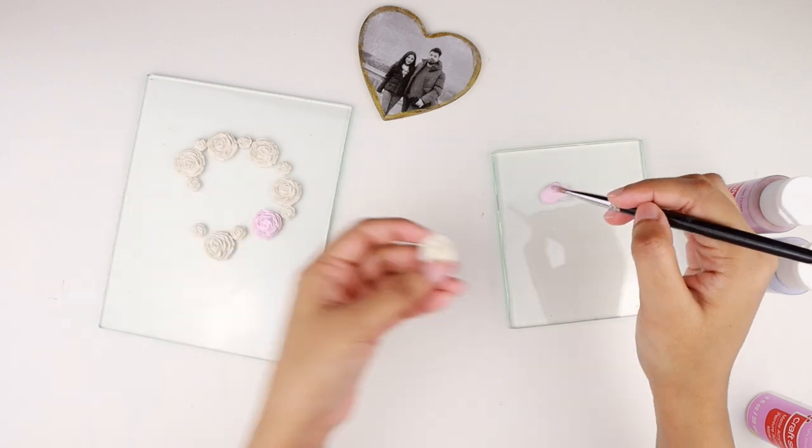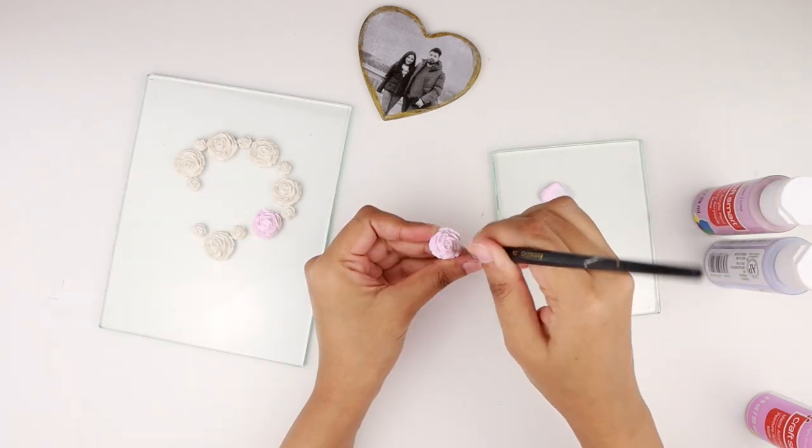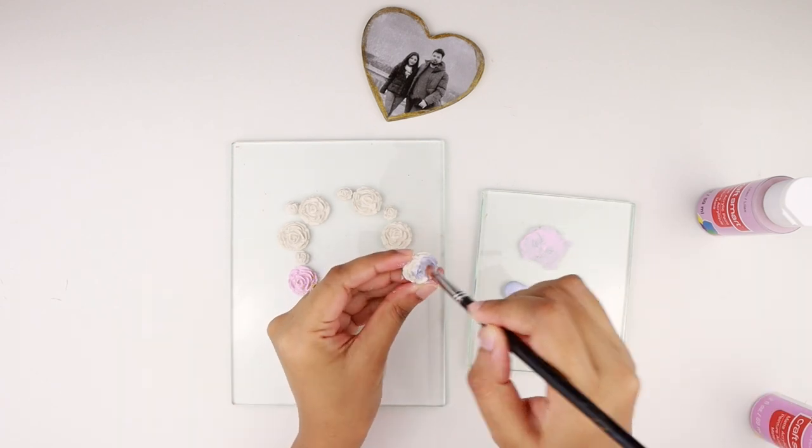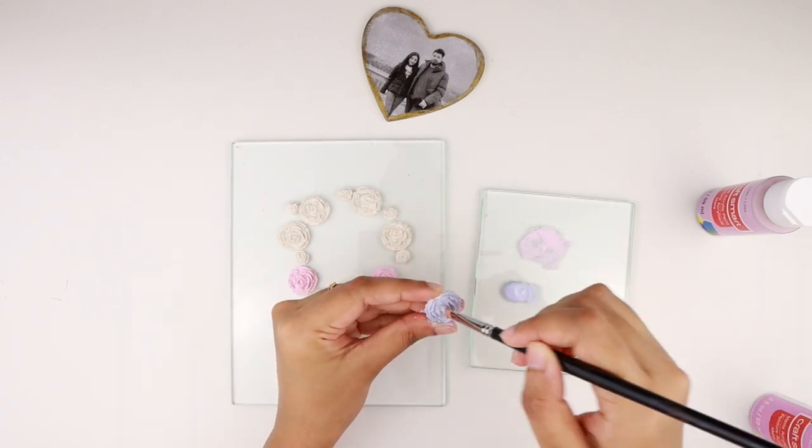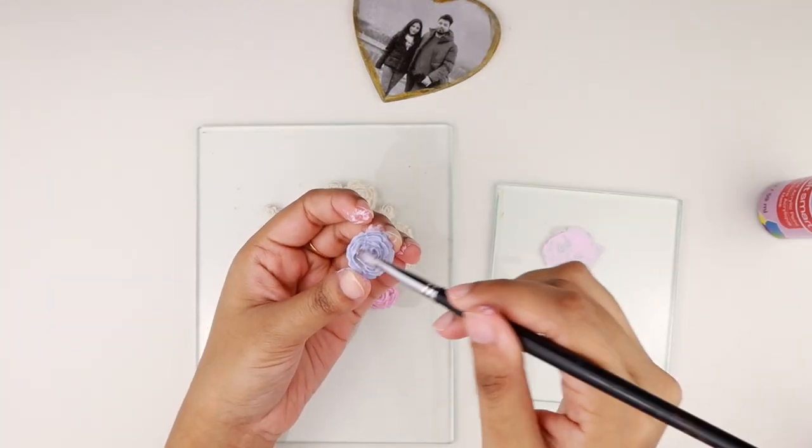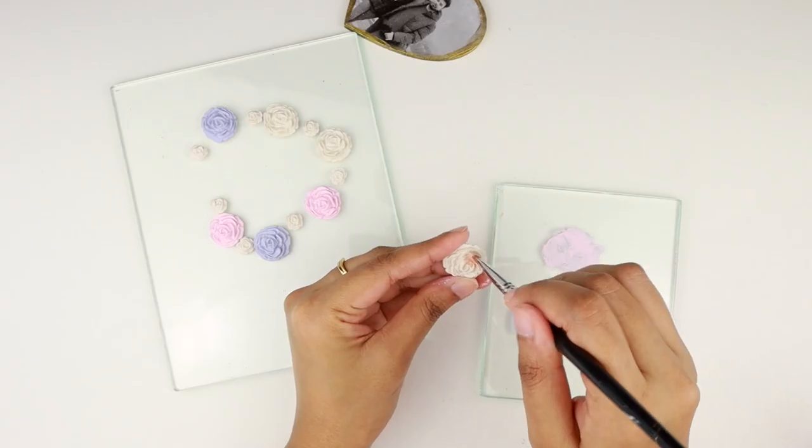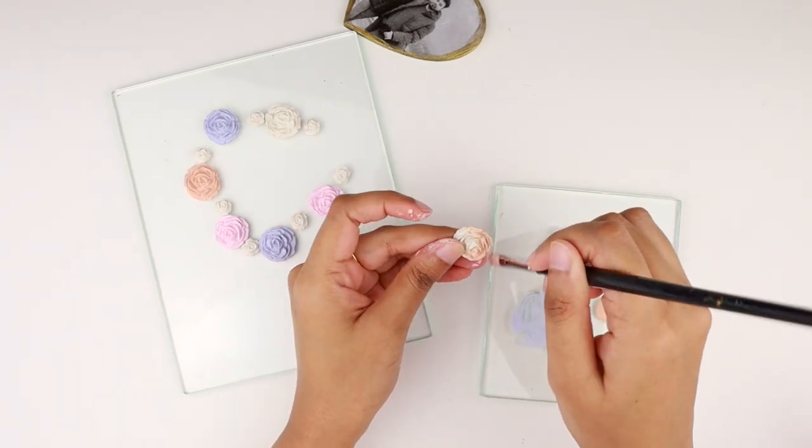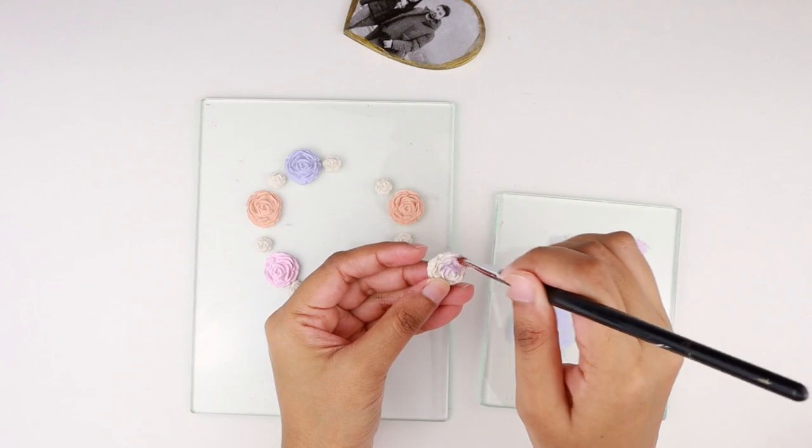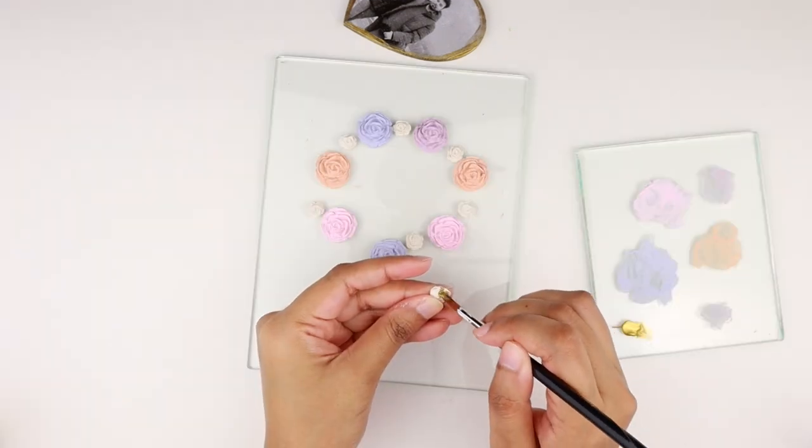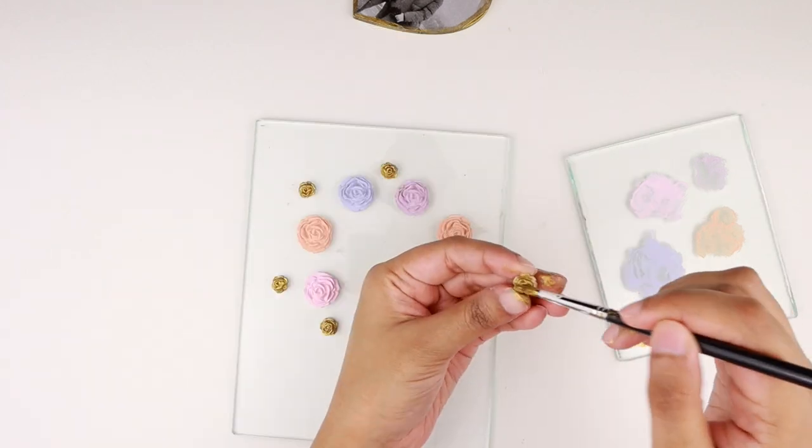Then it was time to paint the flowers. I painted two of these with a light pink acrylic paint. I used this light blue to paint two more roses. As we can see, I'm using pastel colors to paint the roses. Then I'm using a coral color to paint two of them. For the last rose, I'm using a lilac paint.